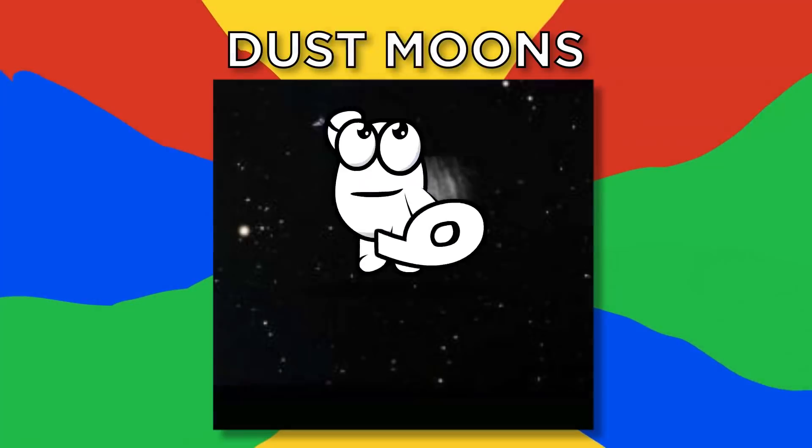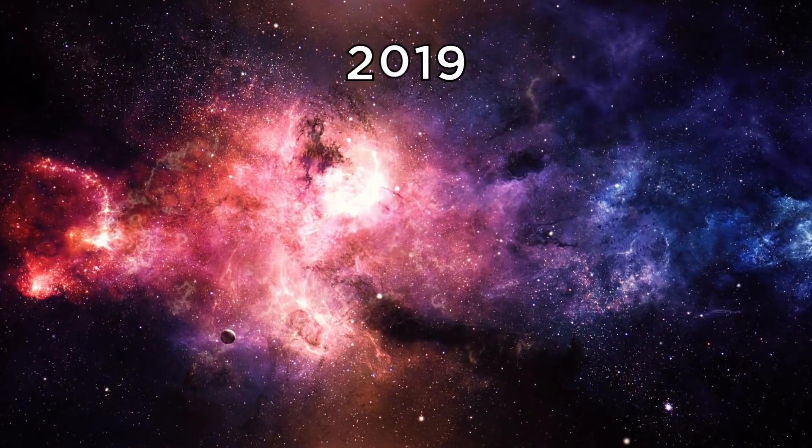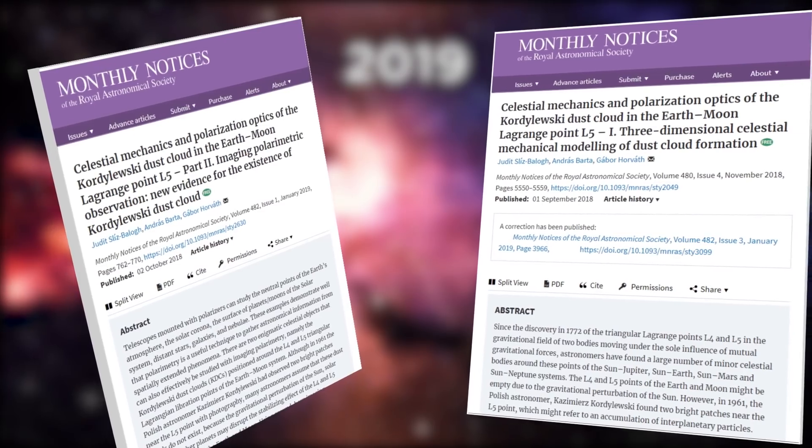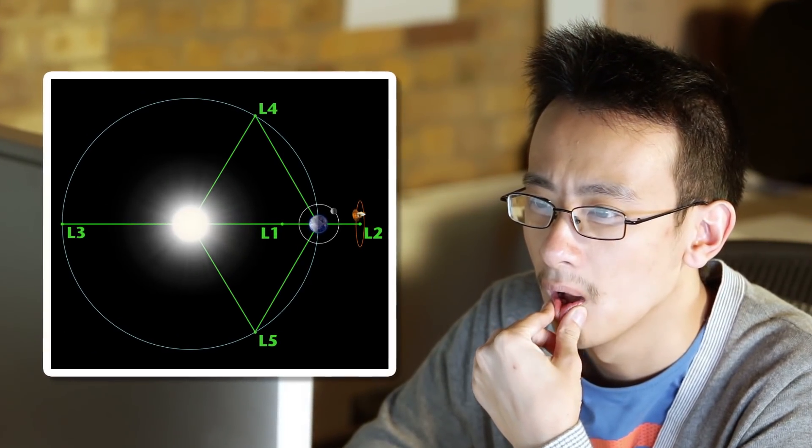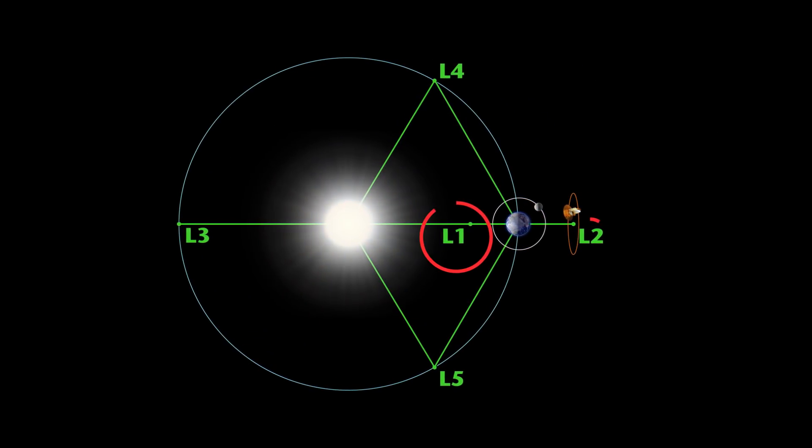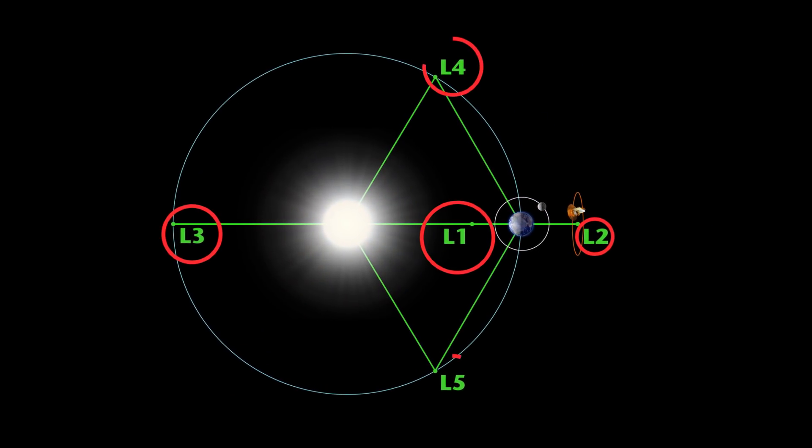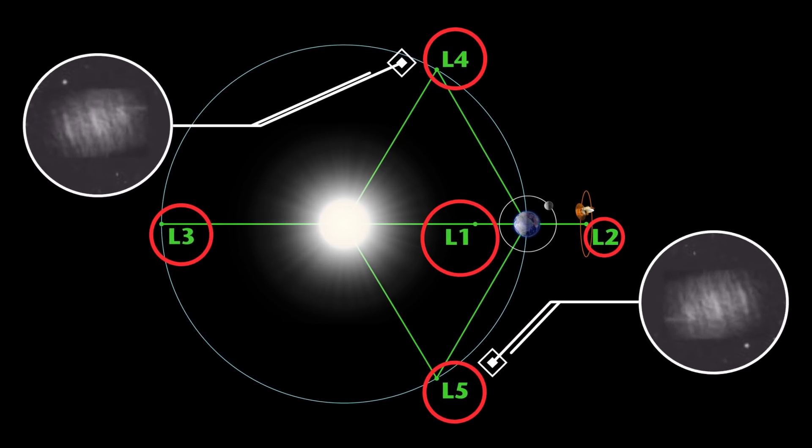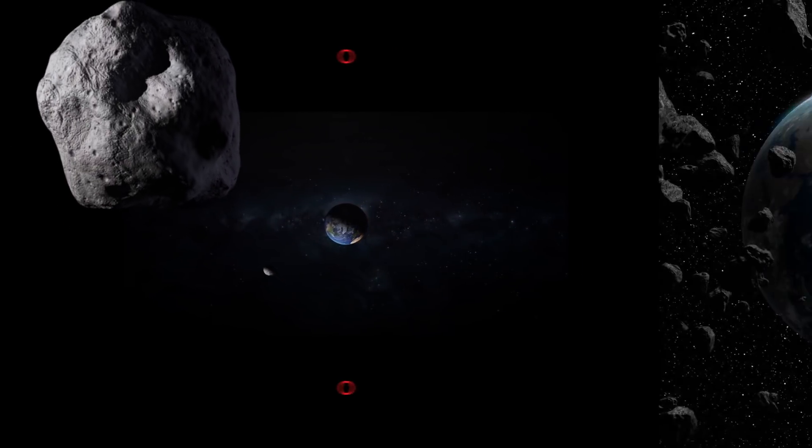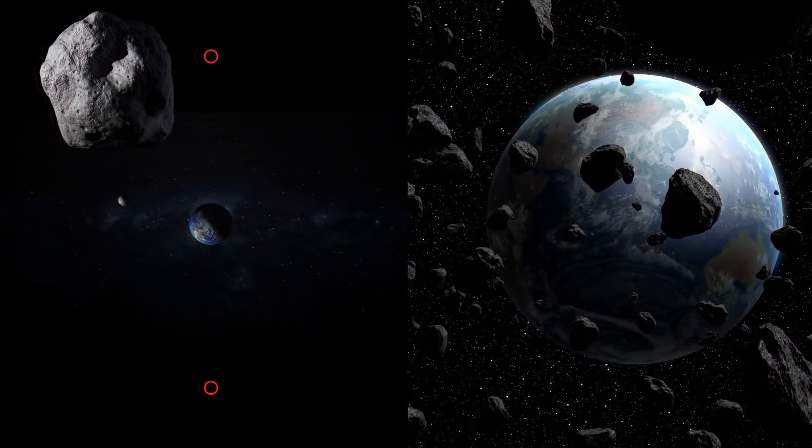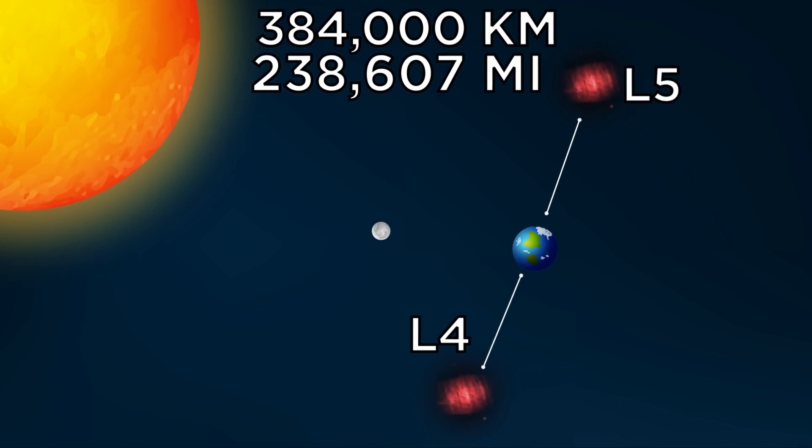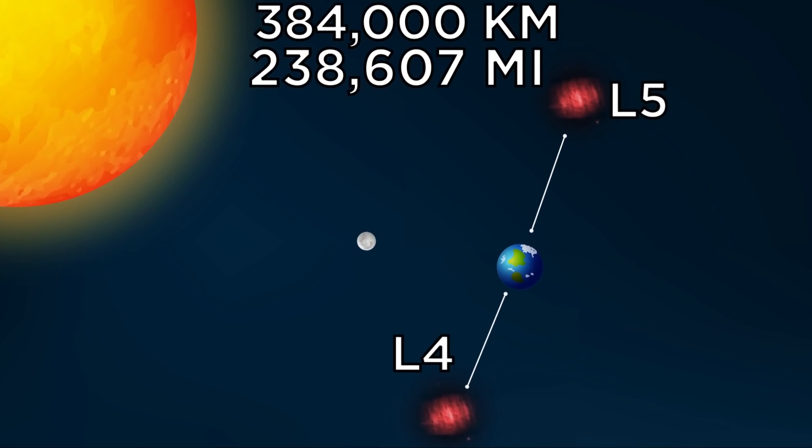Number nine, dust moons. In January 2019, two studies about dust moons appeared in the monthly notices of Royal Astronomical Society. To understand these dust moons, it's important to know about the Lagrange points. These are the five points in deep space that balance gravitational pull between the Earth and its moon. Two of these points are L4 and L5. If a space object resides in any of these two points, they won't lose their position.